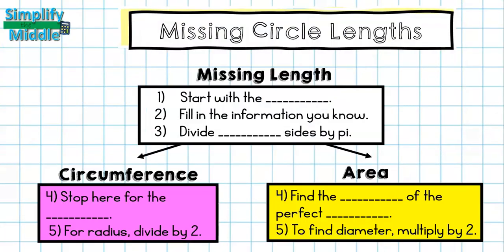Let's recap. Today we learned to find the missing lengths. For the first three steps no matter if it's area or circumference, I will start with my formula. Then second, I will fill in the information that I know. Third, I divide both sides by pi. And then for circumference, I would stop right there to find the diameter. Or if I needed the radius, I would divide by 2.